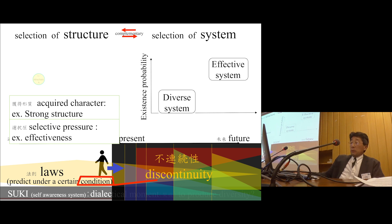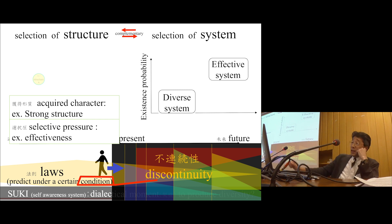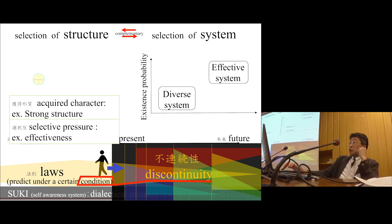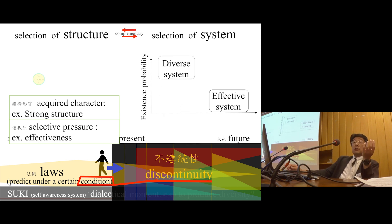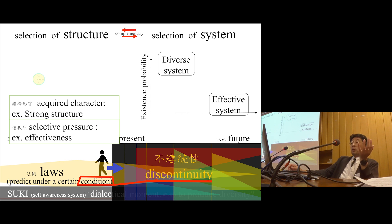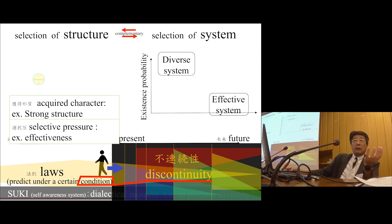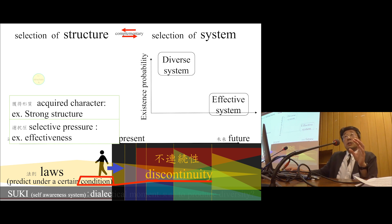If you think about an effective system and a diverse system, the existence probability is higher in the effective system because it is effective. But think about this continuity — it's changing. Then it changes the diverse system. The existence probability of the diverse system is higher. That's why diversity is required for us to survive this continuous change of environment.